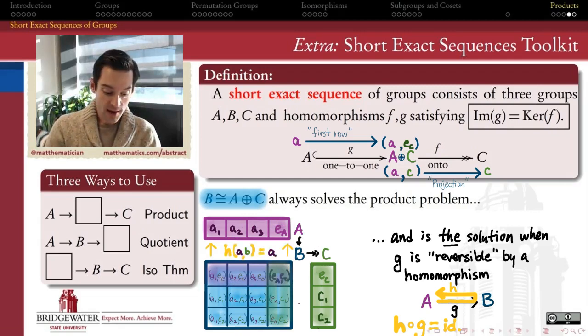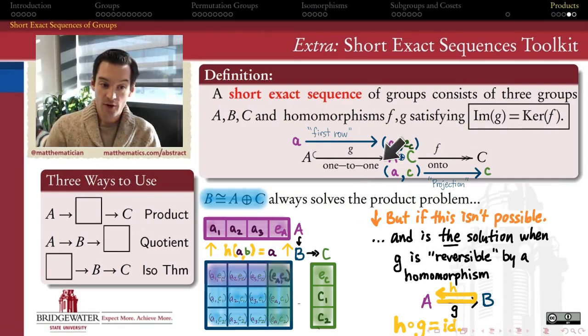When there's that reversibility, as there is in this example, so it's just the projection onto the first coordinate would be an example of a homomorphism H that accomplishes that. Then it turns out that this solution is always isomorphic to the direct sum of A with C. So, the external direct product of A and C always solves the product problem, but in a situation where this first homomorphism G is not reversible, then there may be other solutions.